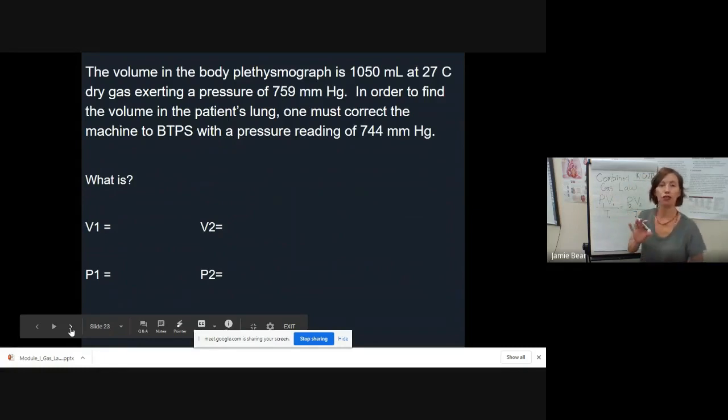The easiest way to do these equations is to solve for your unknown variables. Then we can rearrange the equation to see what we're looking for. We're looking for volume, we already have V1, so we're solving for V2. To isolate V2, we have to get rid of these two variables. What we do to one side, we always have to do to the other. The new equation is V2 equals P1 V1 T2 over T1 P2.